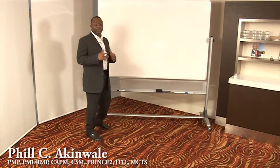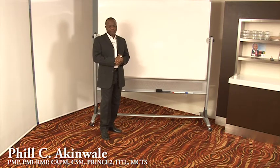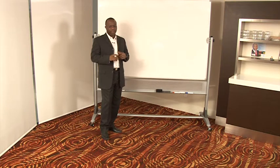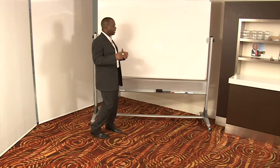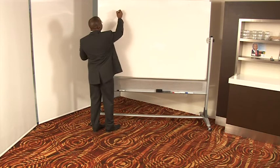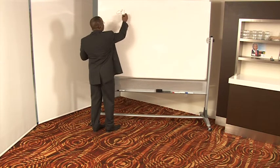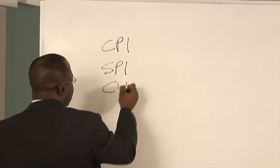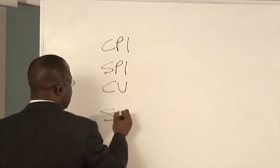So there are four earned value metrics that we need to really understand for problems on the PMP. These metrics are the derivative metrics, and they are CPI, cost performance index, SPI, schedule performance index, cost variance, and the schedule variance.